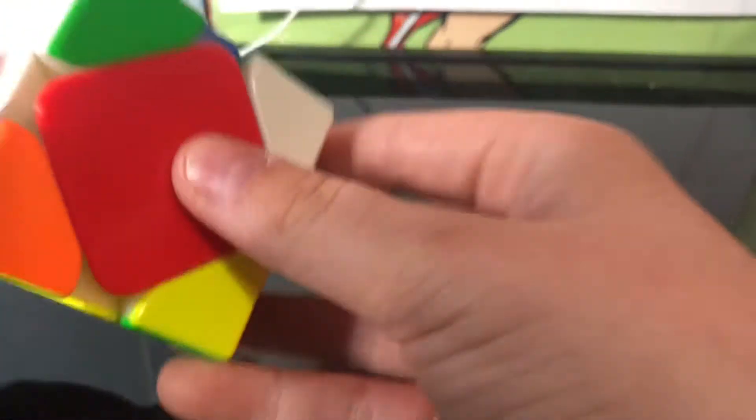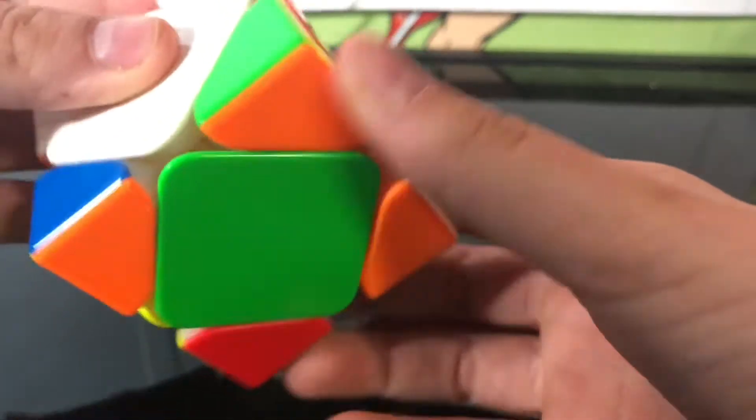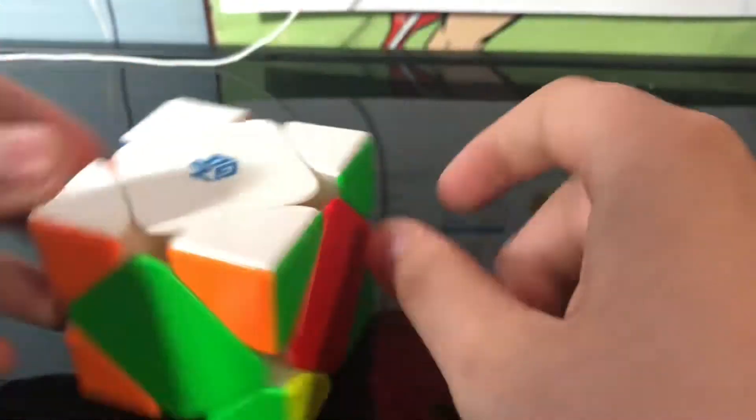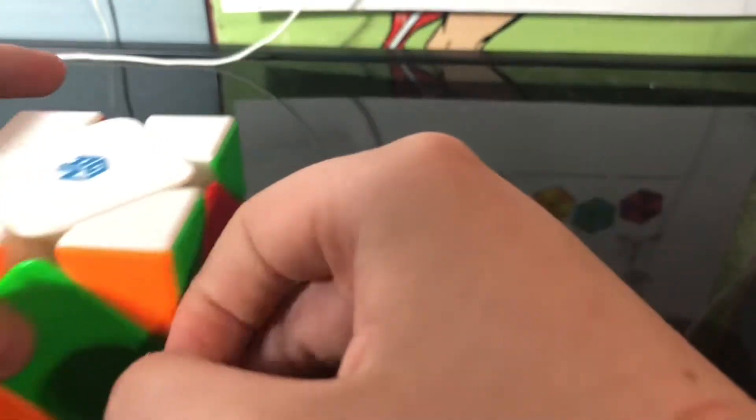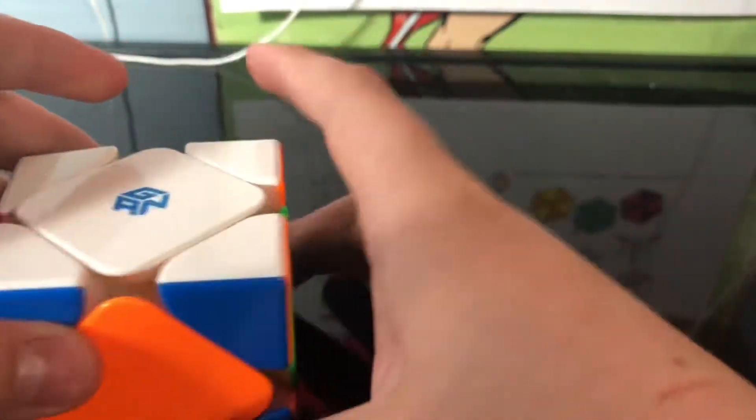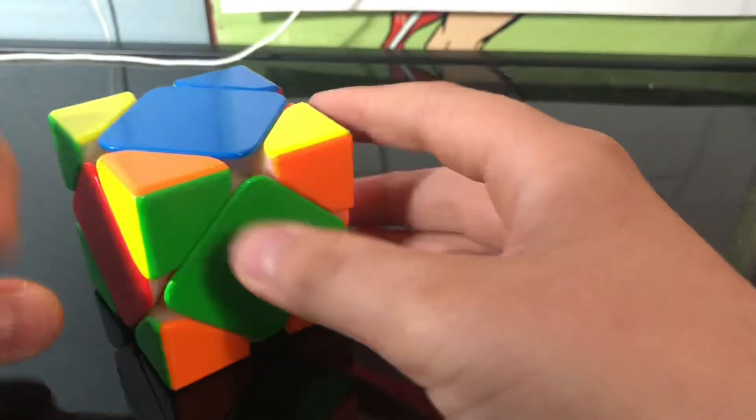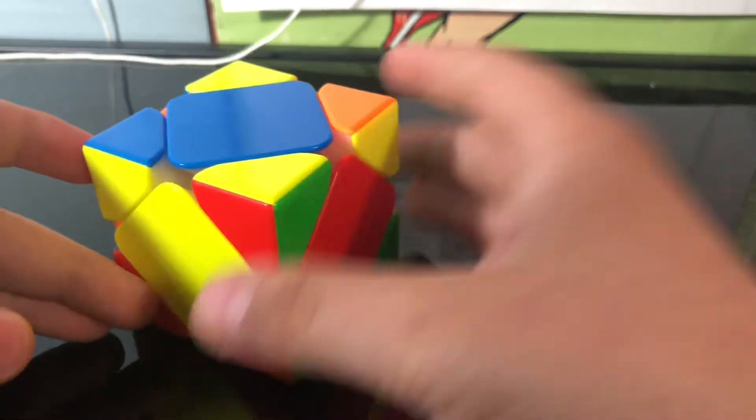After you solve the first white layer, you can talk whatever there, but right here you're gonna flip to solve the yellow layer. And once you're here, you can only have three different choices.